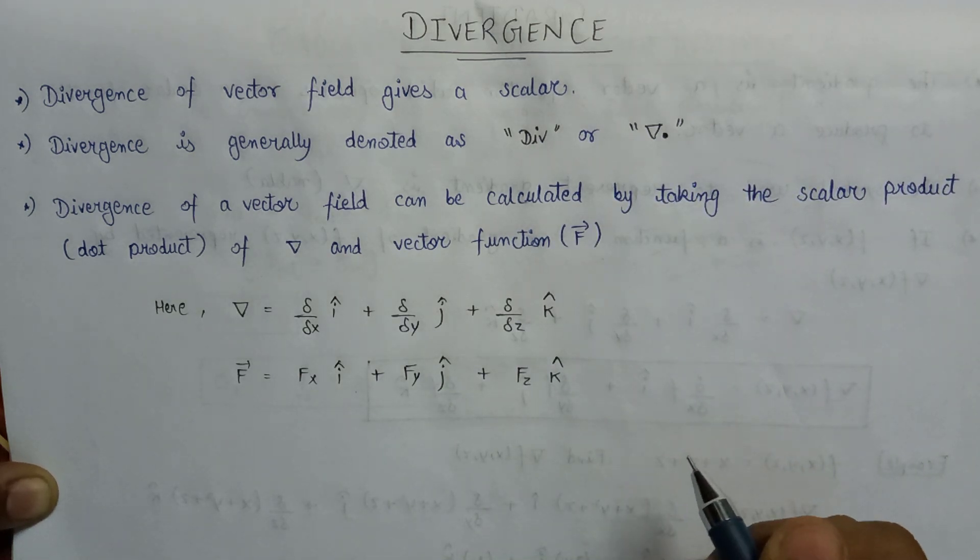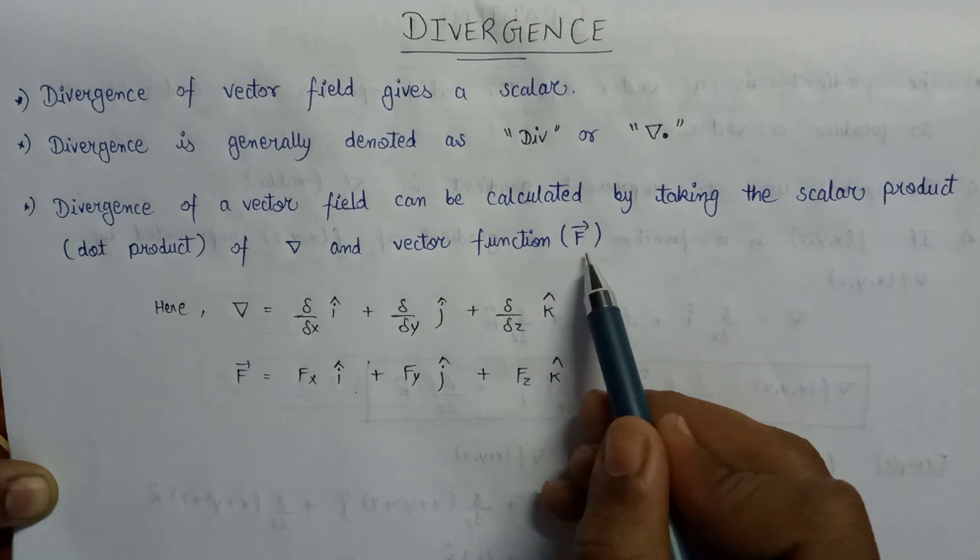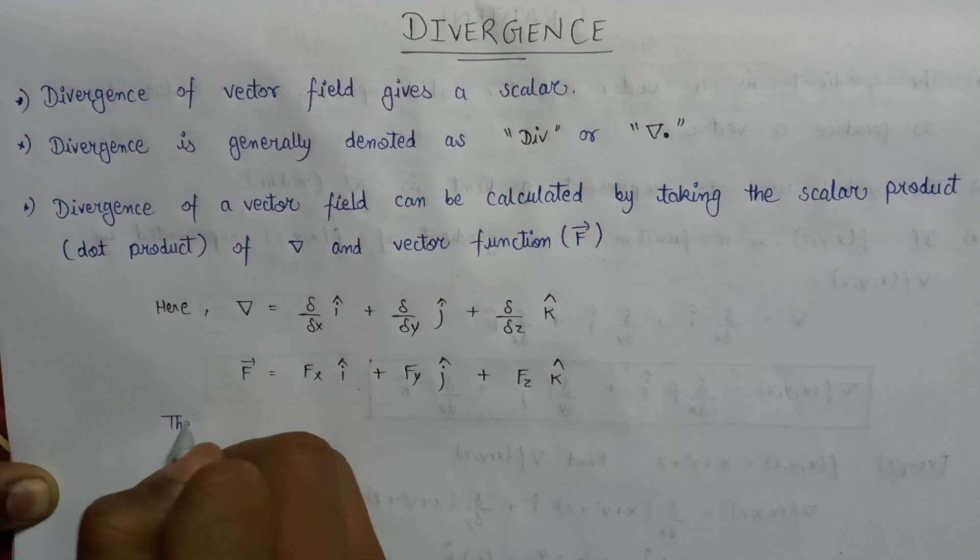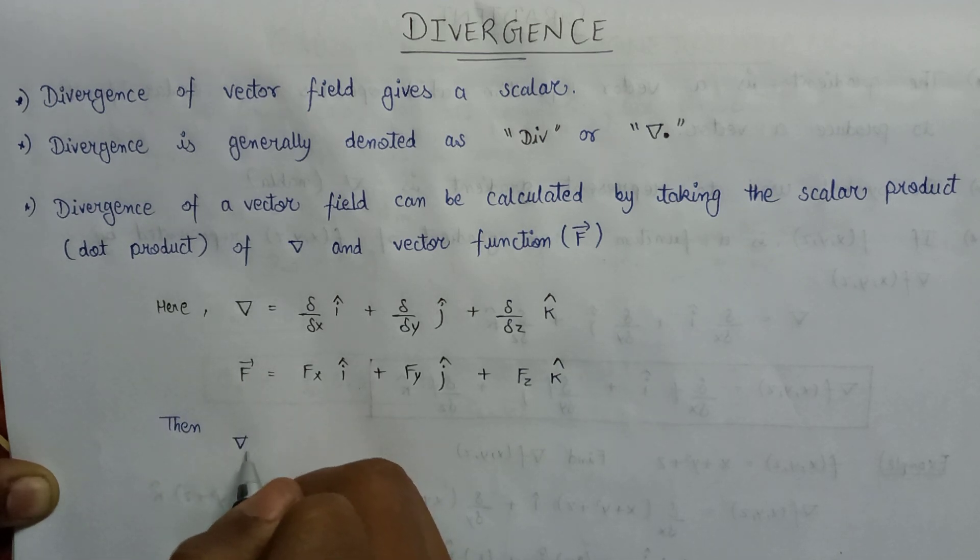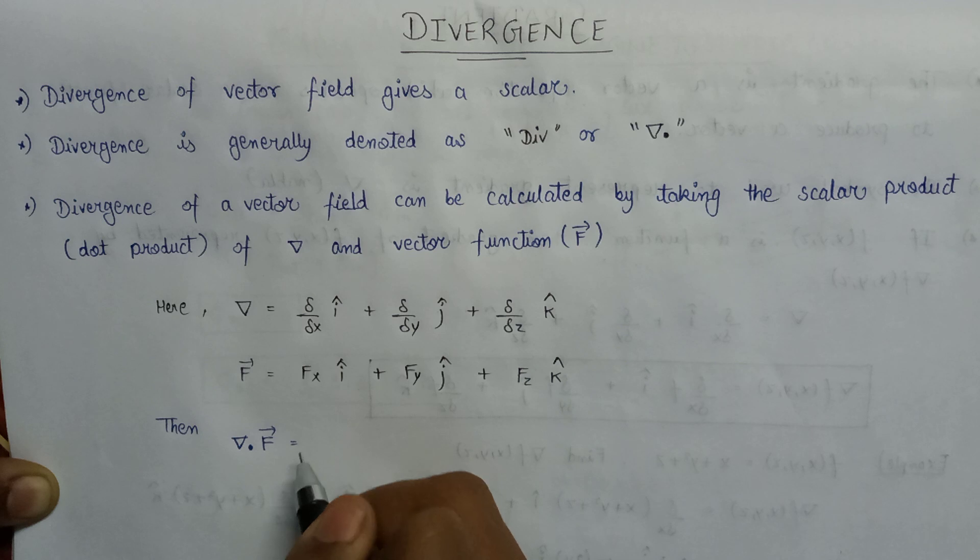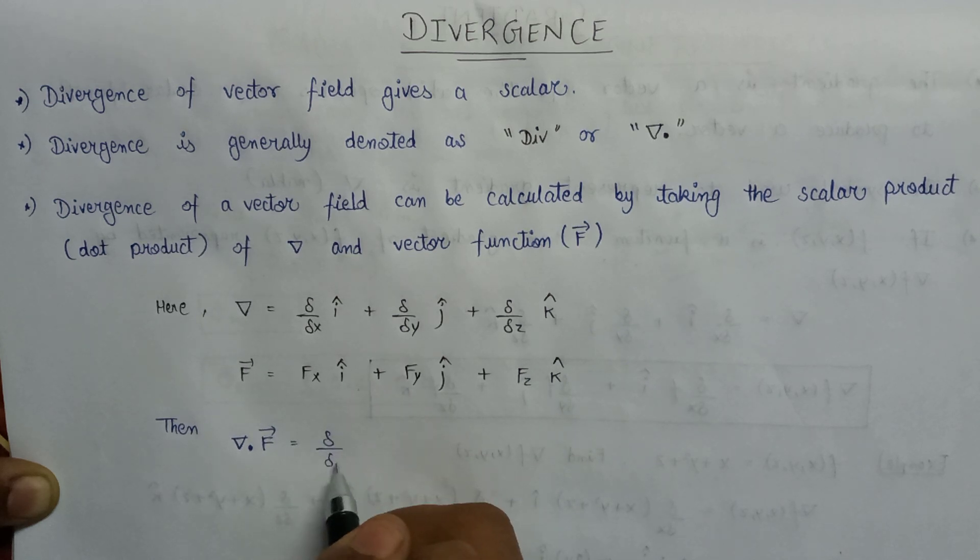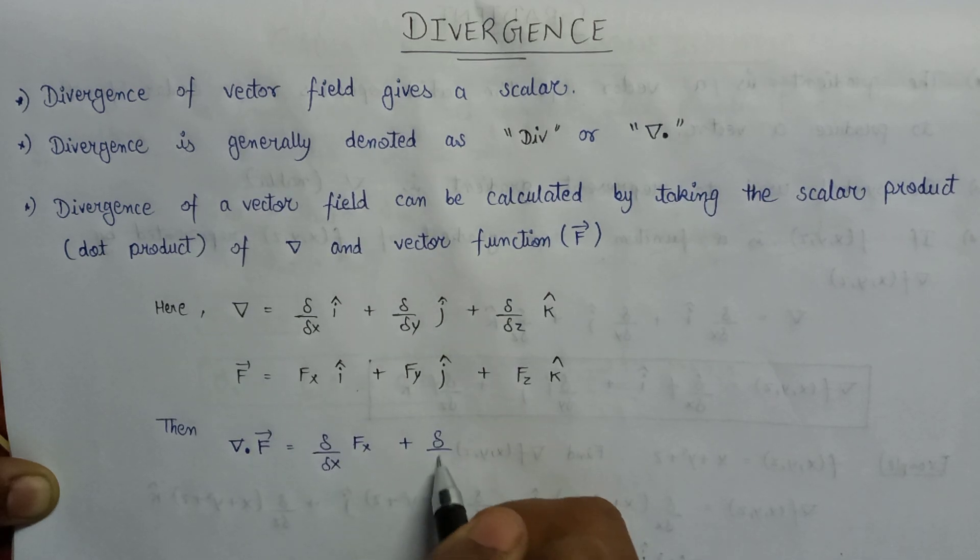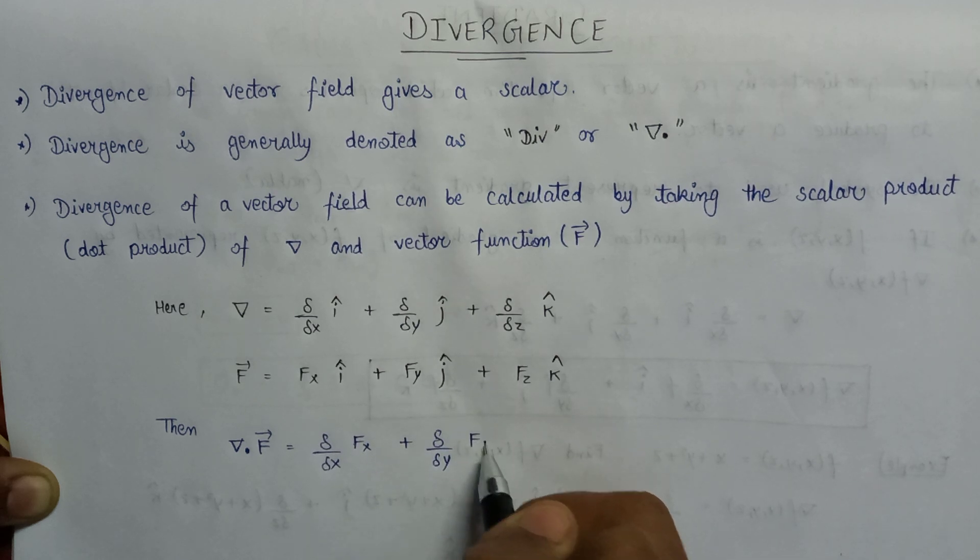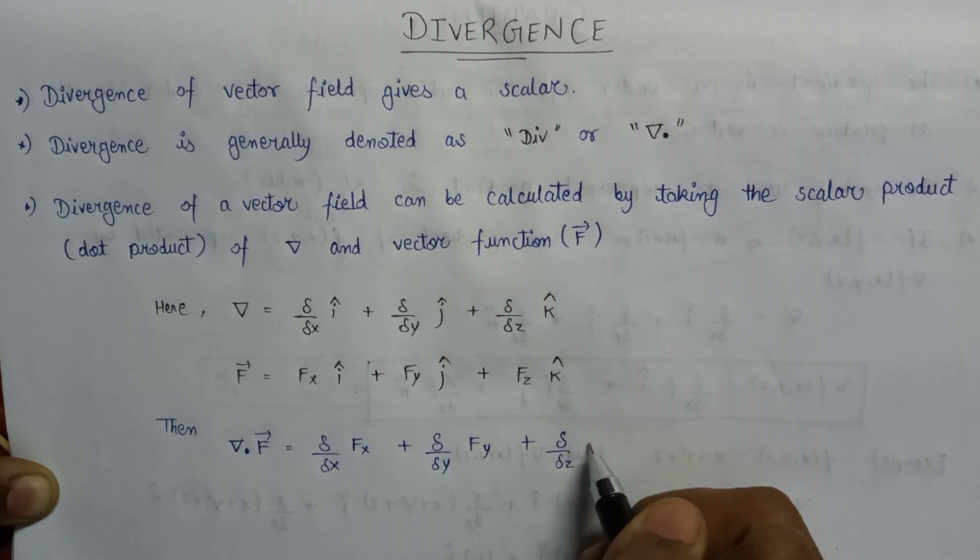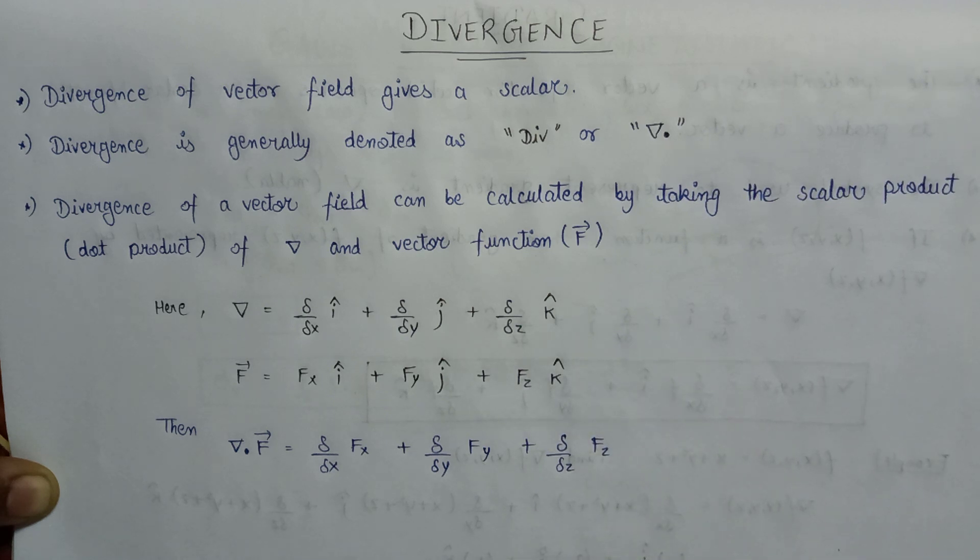Now what we need to find is we need to find the divergence of the function, that is f vector. So finally, the divergence that is represented as del dot of the function f can be given as del over del x of fx plus del over del y of fy plus del over del z of fz.